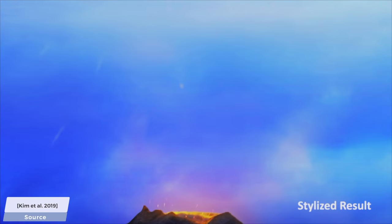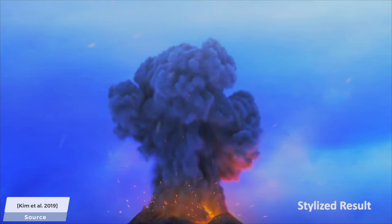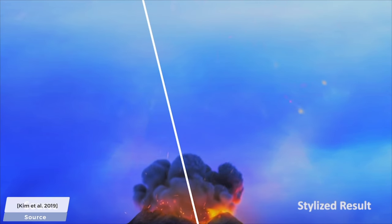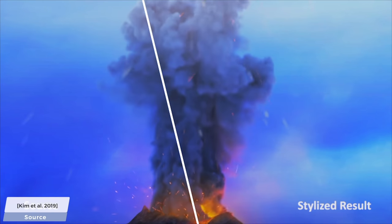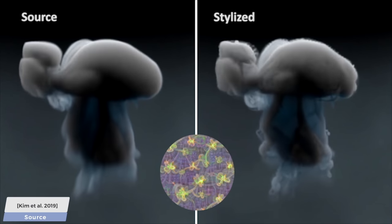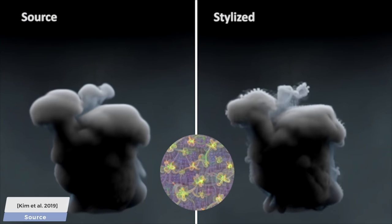Doing this for smoke simulations is a big departure from 2D style transfer because that takes an image, where this works in 3D and does not deal with images, but with density fields. A density field means a collection of numbers that describe how dense a smoke plume is at a given spatial position. It is a physical description of a smoke plume, if you will.